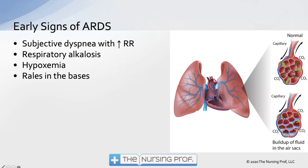If we're not taking a blood gas, we can still watch for that slowly, steadily increasing respiratory rate associated with subjective dyspnea. Eventually we're going to get some hypoxemia occurring, and crackles on the bases. Those are all going to be some early signs that our patient is developing ARDS. If we have the blood gas, then of course we're going to see what we saw in our case.